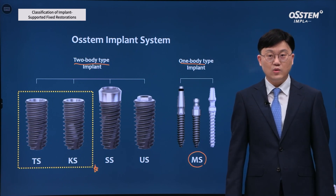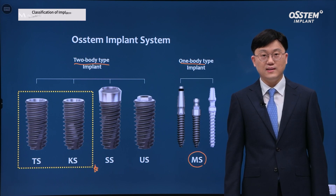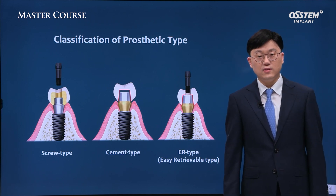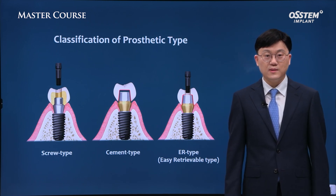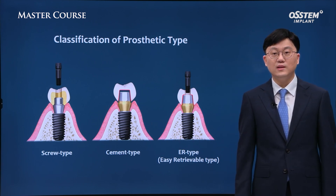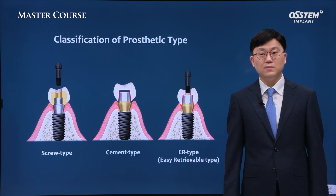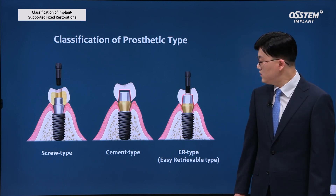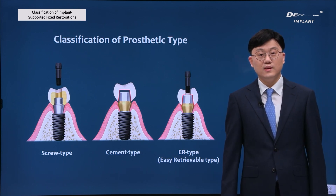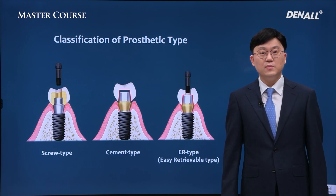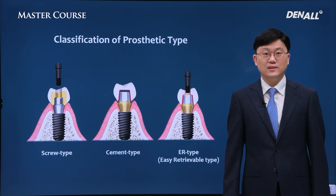Depending on the way the implant and prosthesis are connected, it can be divided into three types: screw type, cement type, and ER type. Screw type is where the prosthesis is connected with the implant via a screw. Cement type is when the abutment is connected and the crown is cemented thereafter. As for ER type, a hole is formed on the crown and cement is used for adhesion.